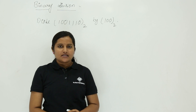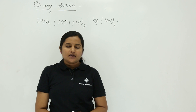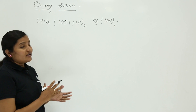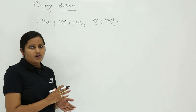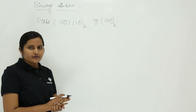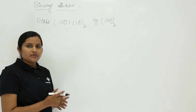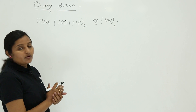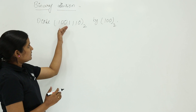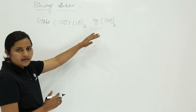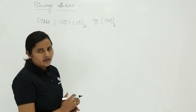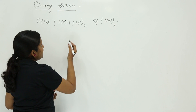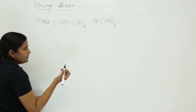In this class we are going to discuss binary division, which is under binary arithmetic. Binary division is like normal division in decimal, but we divide one binary number with another binary number. For example, divide 100111 binary by 100 binary — you have to divide this number with this number.